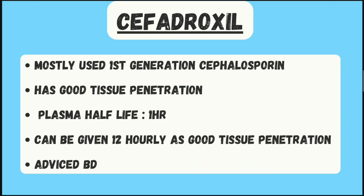Now we will move to cefadroxil. It is the most commonly used first-generation cephalosporin. It has good tissue penetration and a plasma half-life of one hour. Because of its good tissue penetration, it can be given every 12 hours and is advised as BD.